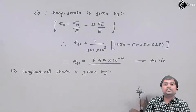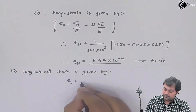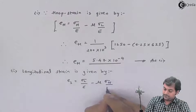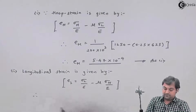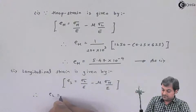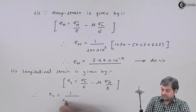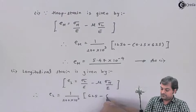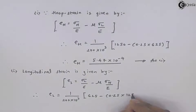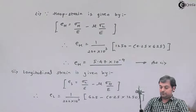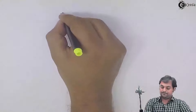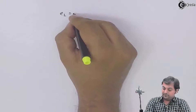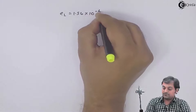The longitudinal strain is given by E_L = (1/E) × (sigma_L − mu × sigma_h) = 1 / (200×10³) × (625 − 0.25 × 1250). From this I will be getting longitudinal strain as 1.56×10⁻⁴. That is the second answer.